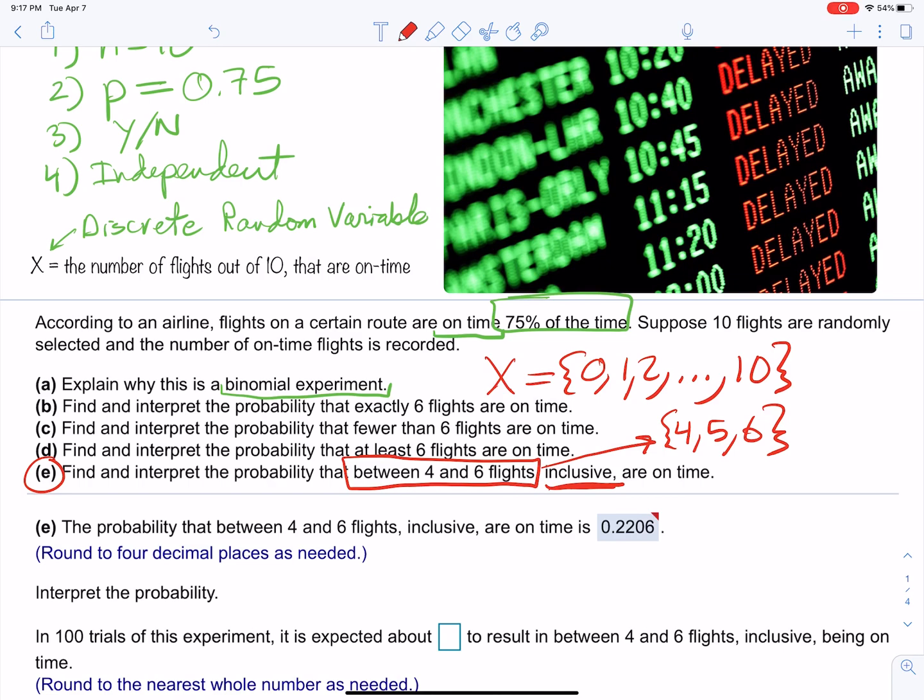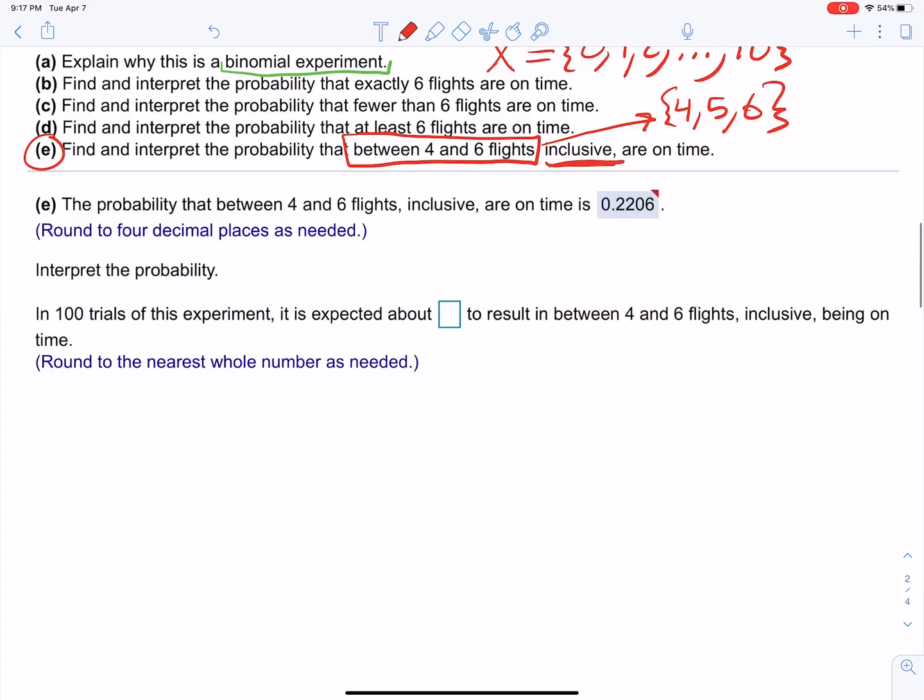So we just need to find the probability of getting four or five or six flights that are on time. There's two ways to do that. Method one: you can do binompdf of four, five, and six separately, and then just add those up. Method two, I prefer, is when you just subtract the binomcdfs.